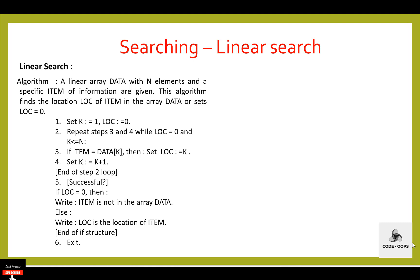In this video we will learn linear search. Linear search is known as sequential search and it is the most basic search technique. In this type of search, you go through the entire list and try to fetch a match for a single element. If you find a match, the address of the matching target element is returned. If the element is not found, it returns a null value.